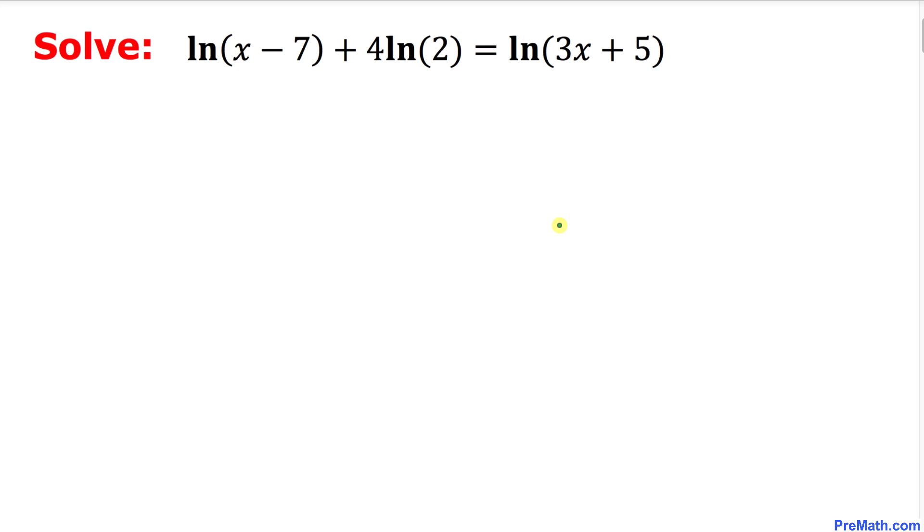Welcome to pre-math. In this video tutorial we are going to solve this given logarithmic equation. Natural log of x minus 7 plus 4 times natural log of 2 equals to natural log of 3x plus 5.